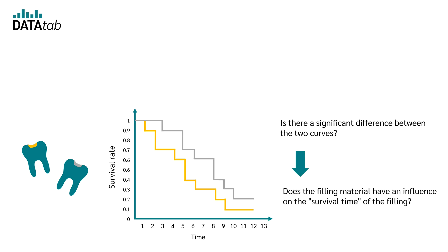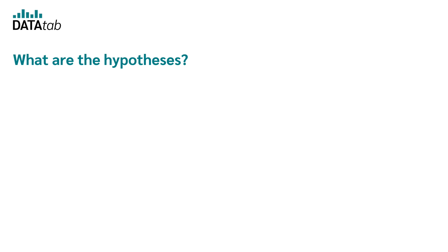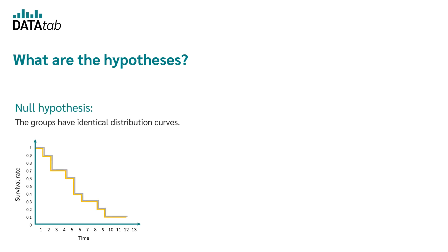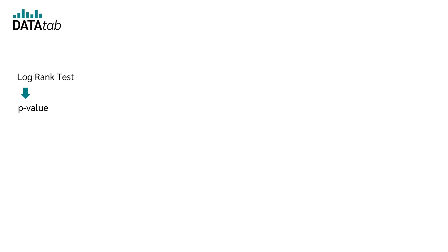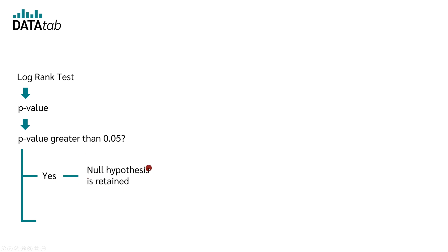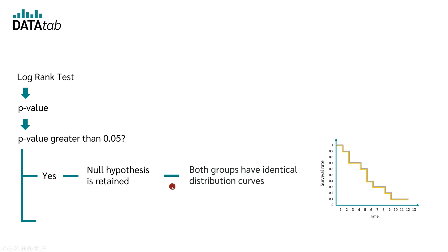The question that the log rank test answers is: is there a significant difference between the two curves? Or in other words, does the filling material have an influence on the survival time of the filling? The null hypothesis is: both groups have identical distribution curves. The alternative hypothesis is: both groups have different distribution curves. With a statistical hypothesis test, you get a p-value at the end of the log rank test. If the calculated p-value is greater than the significance level — set to 0.05 in most cases — the null hypothesis is retained. If the p-value is smaller than 0.05, the null hypothesis is rejected.